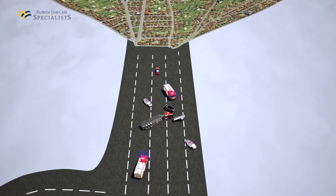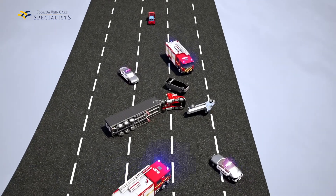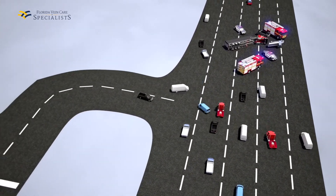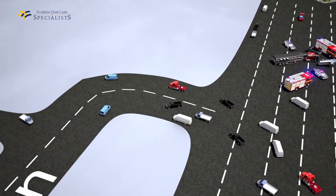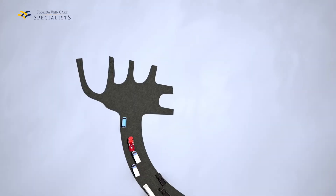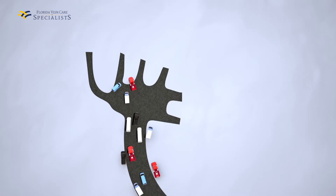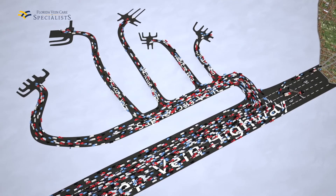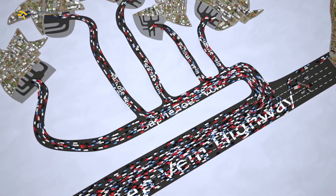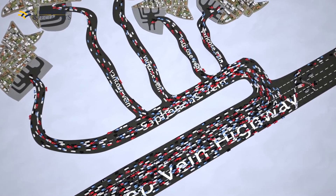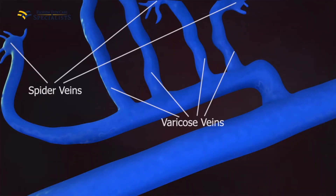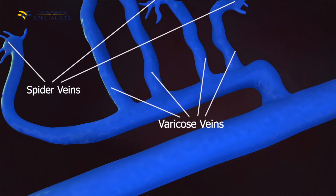Now, let's pretend there is a backup on Deep Vein Highway. The traffic on Deep Vein Highway begins to build, and because of traffic, some cars are forced off the highway onto the saphenous vein street going in the opposite direction. Some of the cars going backward on saphenous vein street begin filling up the peripheral vein streets, and some even go off the road to form new streets. Eventually there is a traffic jam filling up these tiny side streets and driveways. The side streets have to get wider and longer to accommodate all of the new traffic, and more and more cars crowd into driveways, forcing them to get even larger. These side streets appear on your legs as varicose veins, and the driveways are spider veins.